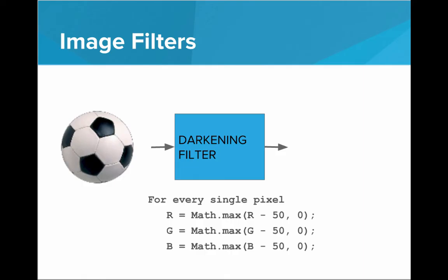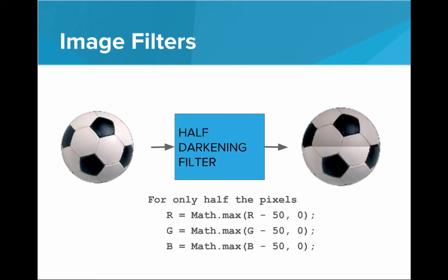If we do this for every single pixel, we will get a darker image. What's cool is if we only do it for half the pixels, we'll get half the image darker and half the image the same. By doing these simple manipulations to the underlying pixel data, to the digital data that encodes images, we can create these really cool results. We can make these really interesting image filters.